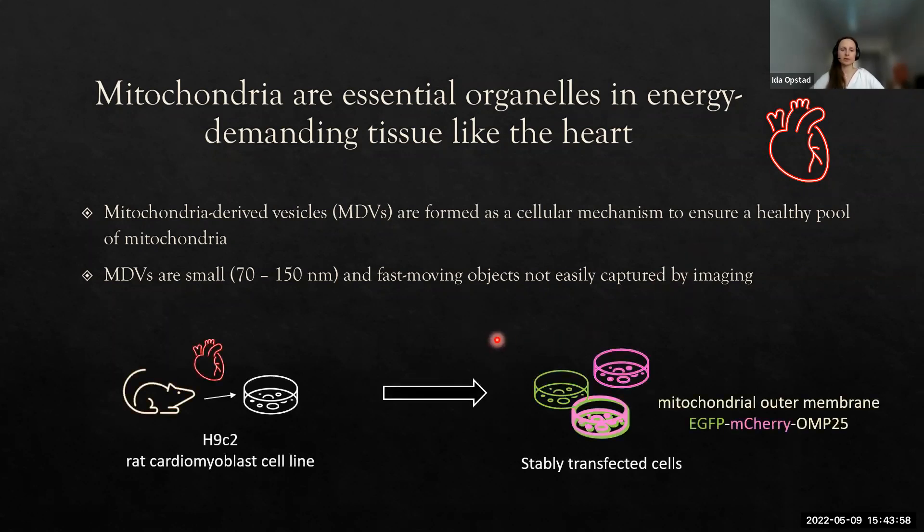The particular cells we are looking at are a cell line called H9C2. It's a rat cardiomyoblast cell line from embryonic rats heart tissue, and it was stably transfected so all the cells are expressing this double fluorescent tag on the outer mitochondria membrane protein UMP25.